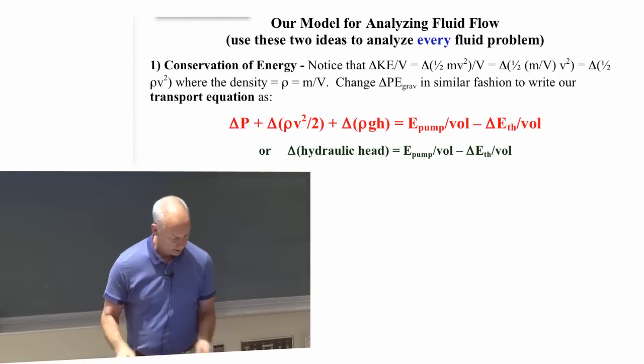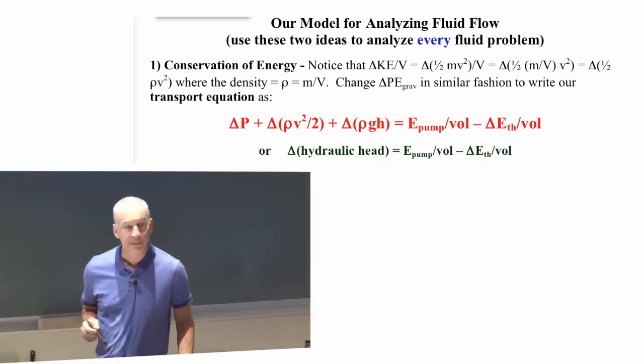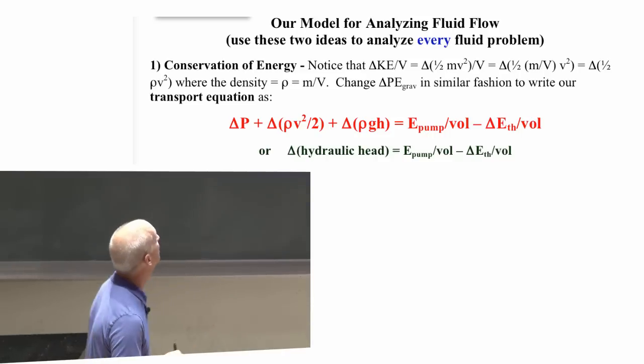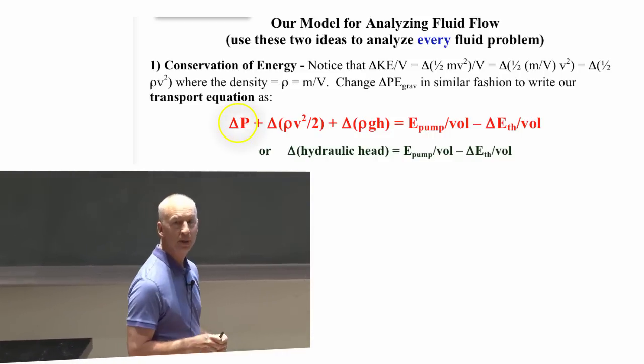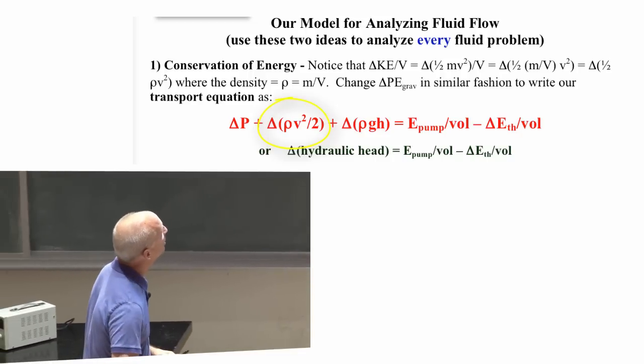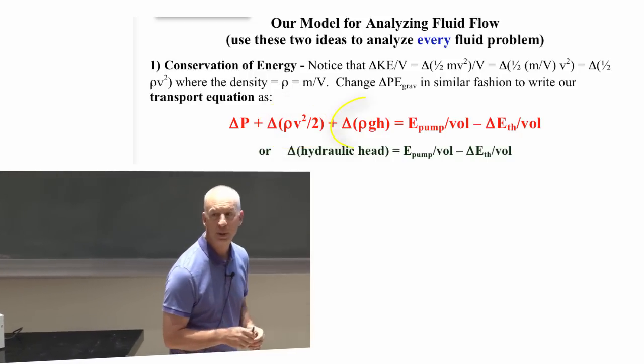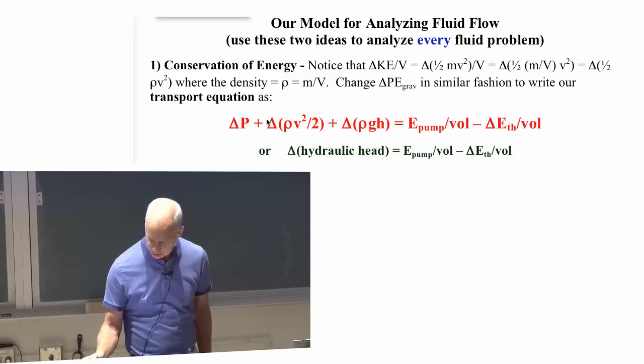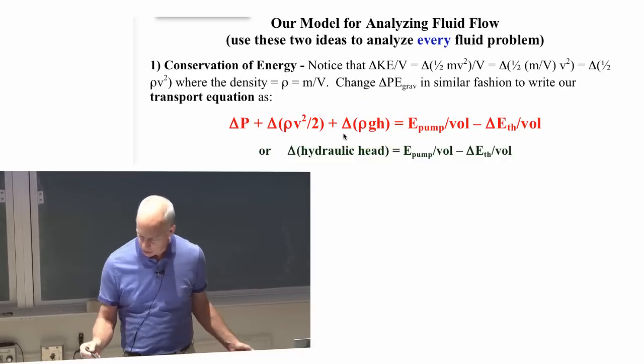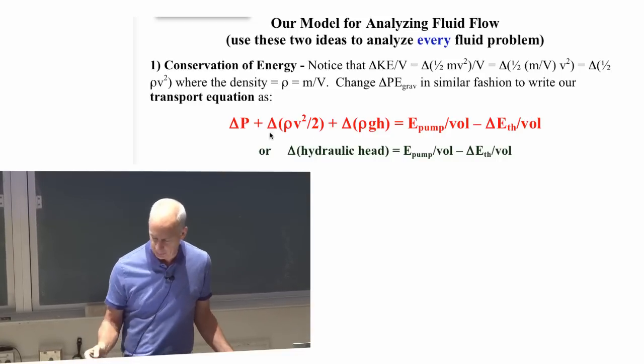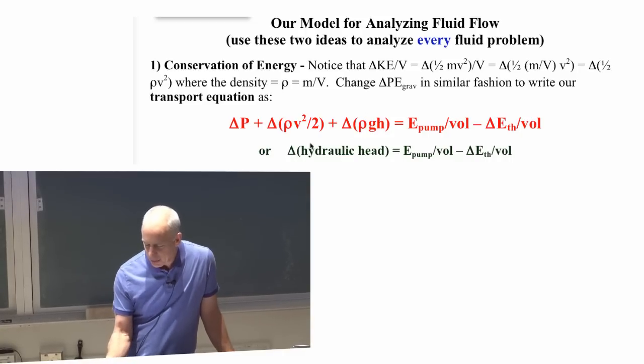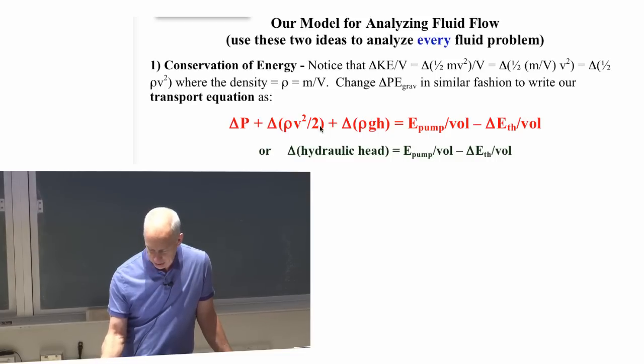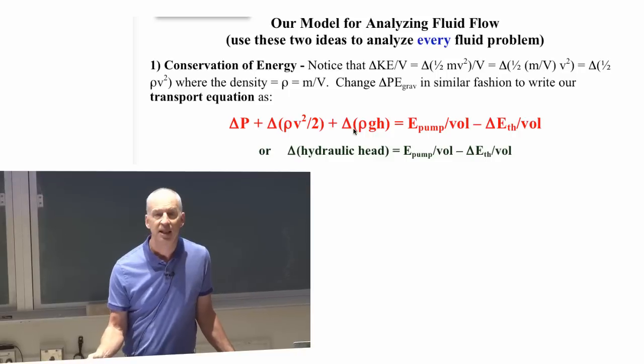Our model of fluid flow is an energy conservation model. We deal with pressure, which is an energy density—energy per unit volume. Kinetic energy per unit volume and gravitational potential energy per unit volume—all those things can change. If you look these up on Wikipedia, there's a standard name for these mechanical energies: gravitational potential energy, kinetic energy, and pressure, in terms of their energy density in fluid flow.